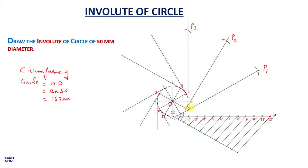Continue marking arcs on the tangents by taking measurements from the horizontal line. Measure from 5-dash to P, place the compass at point 5, and mark an arc — this is P5. Measure from 6-dash to P, place the compass at point 6, and mark an arc — this is P6. In the same way, mark P7, P8, P9, P10, and P11.